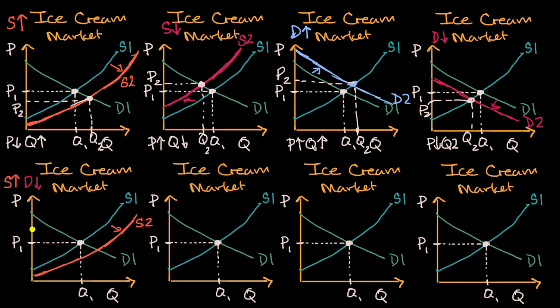And so our demand, if it goes down for a given price, people would demand less quantity, so we're shifting to the left and down. This is D2 right over here, shifted to the left and down.